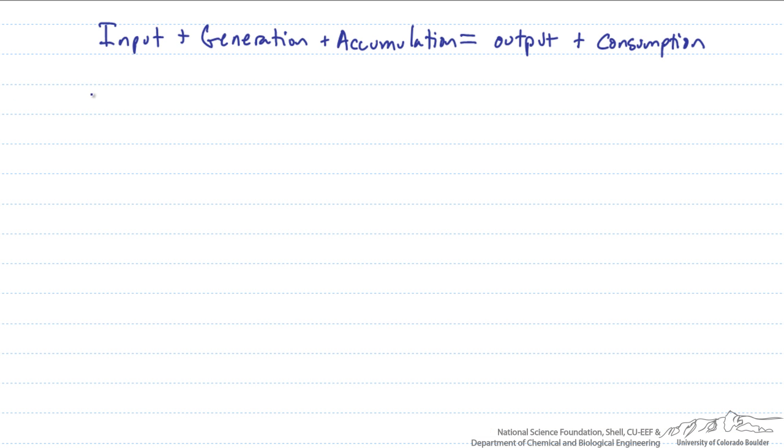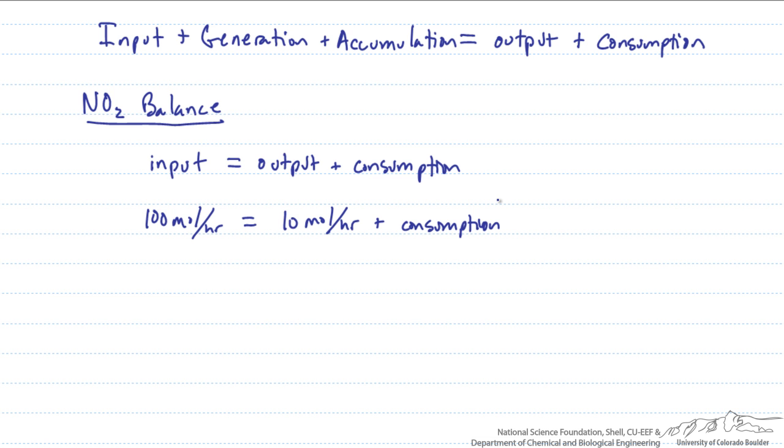The first component that we'll take a look at is the NO2. For the NO2 we have an input term because coming into the system we have NO2. We're not generating NO2 so we don't have a generation term nor are we accumulating NO2. Input is the only thing left on the left hand side. Coming out we have both output and consumption of NO2. We have 100 moles per hour coming in and we can see that we have 10 moles per hour coming out, and then whatever is left must be our consumption. In this case consumption would be 90 moles per hour of NO2.